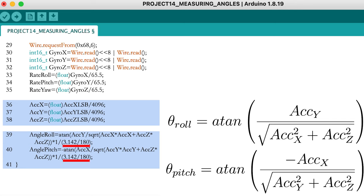In the next video, I will show you how you can combine both measurements and get rid of their individual disadvantages by using a Kalman filter. Thank you for watching this video. Don't forget to subscribe if you like the series, and remember that you can find all tutorials on YouTube and the full code on GitHub. The manual which contains all explanations is available as well on GitHub if you need some more information. Thanks for watching and see you next time.